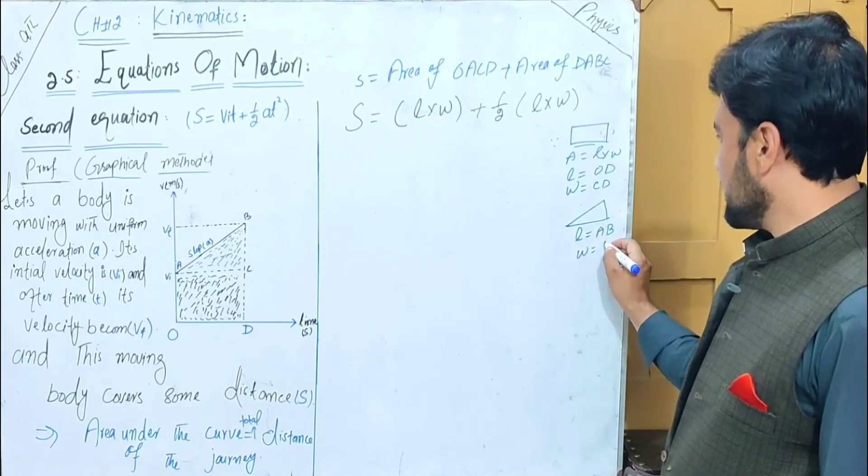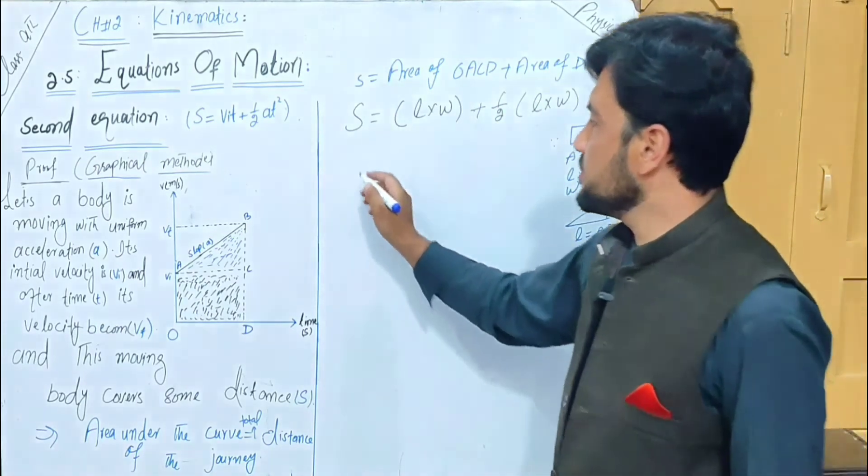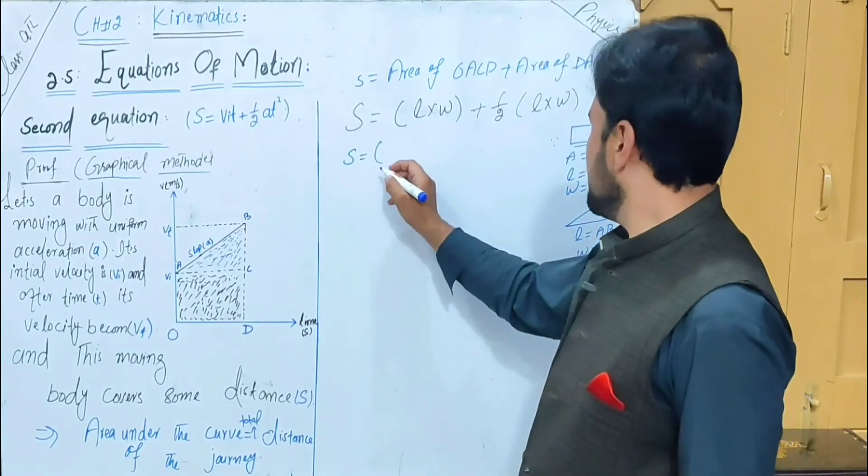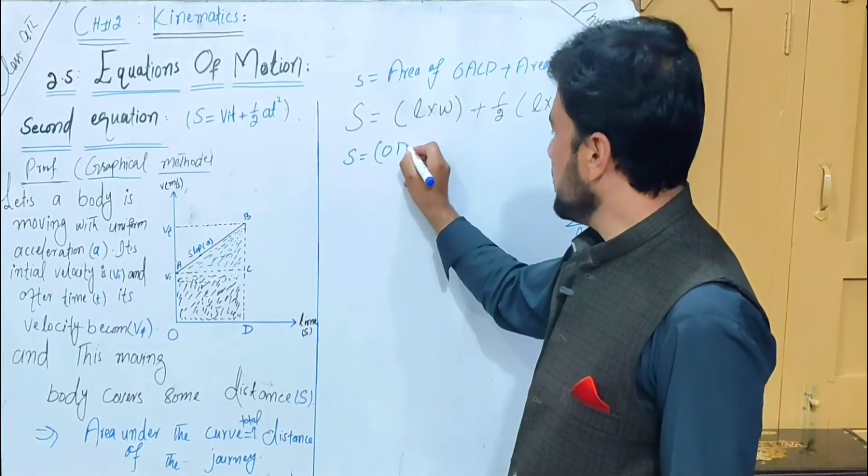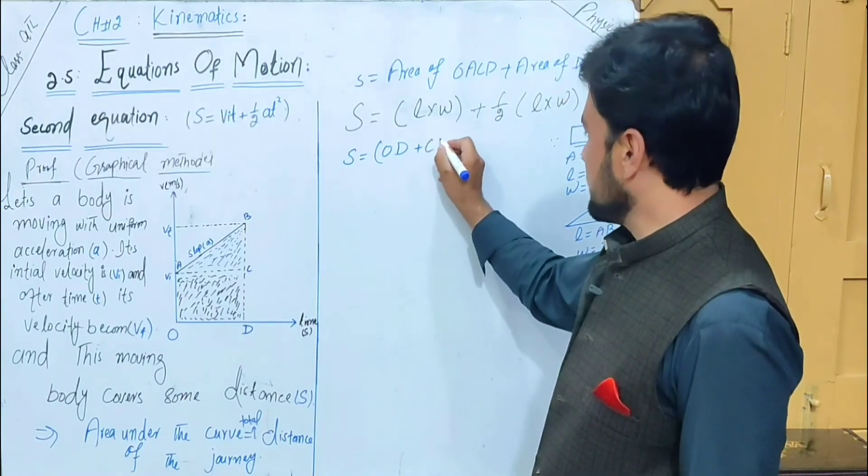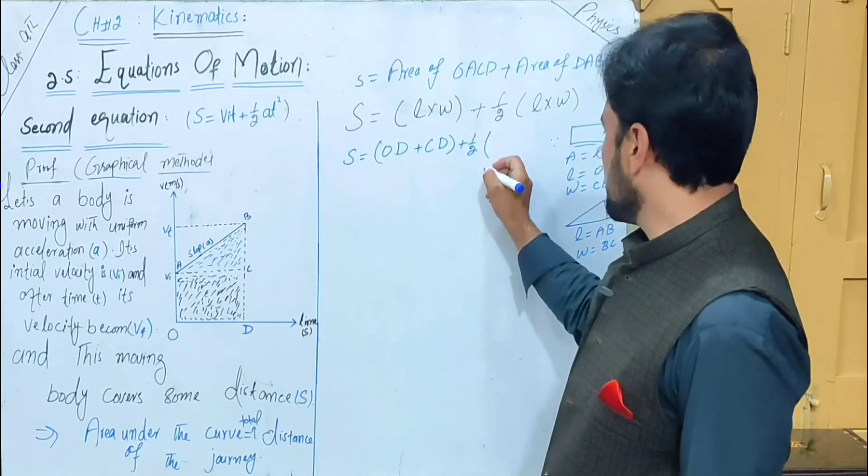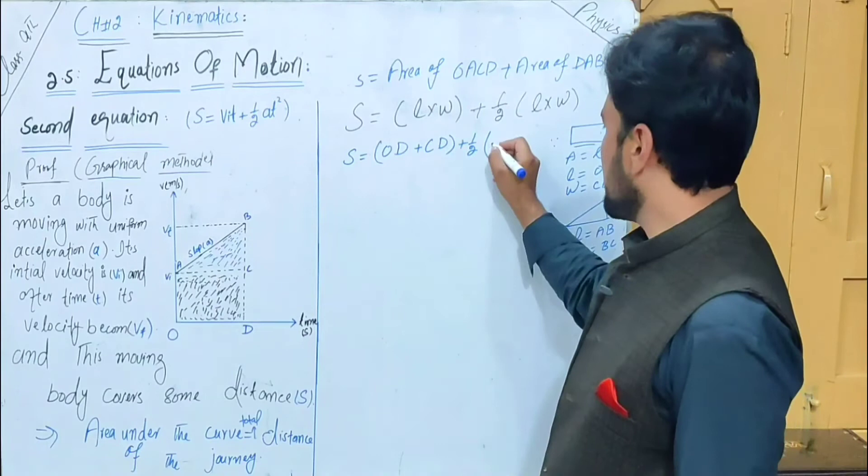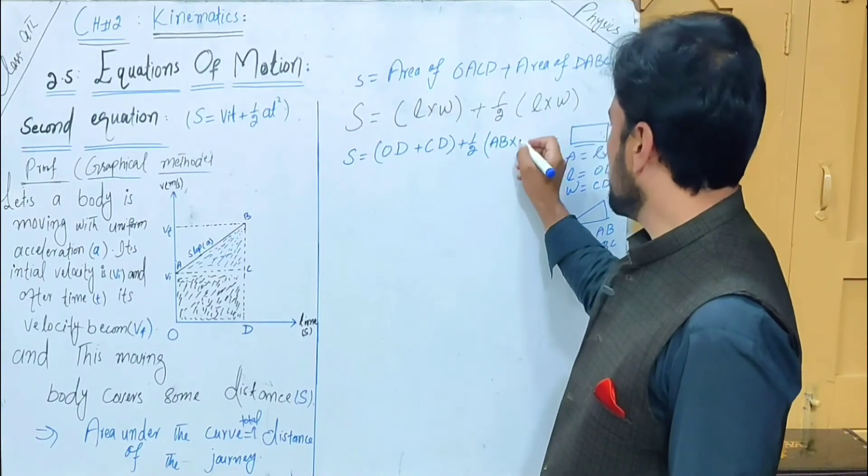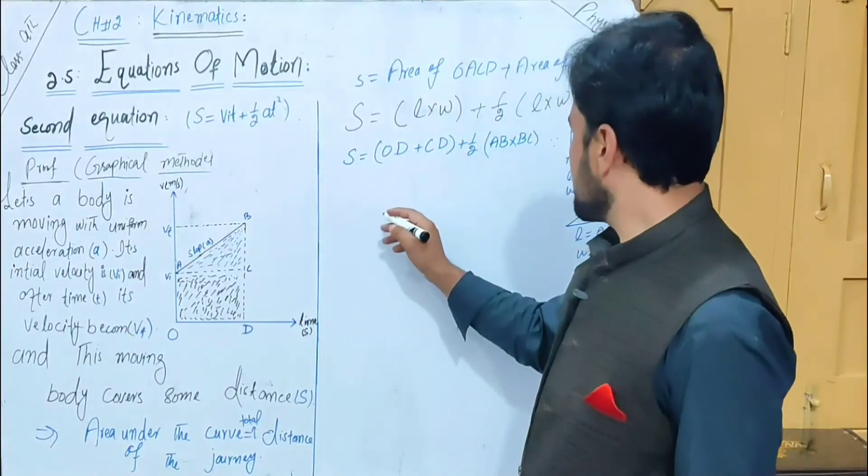The rectangle's length is AB or the length is BC. W is equal to CD. Put this in the equation. The distance s equals LW. L is equal to OD, W equals CD.